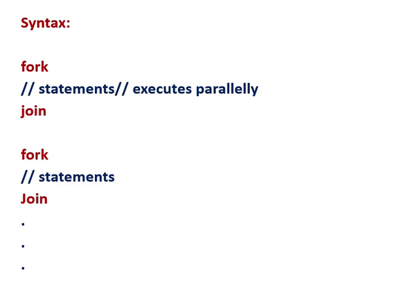The syntax for fork and join starts with the keyword fork and ends with join. Inside the fork and join we can have many statements, and all of them execute in parallel. We can have more than one fork and join in a design. Fork and join is normally used not for designing but for testing — while writing the test bench, we can take advantage of this construct.